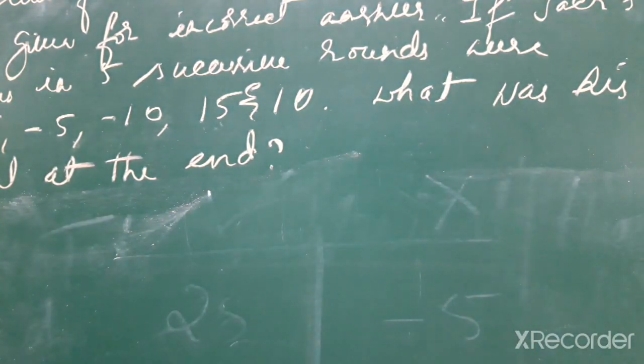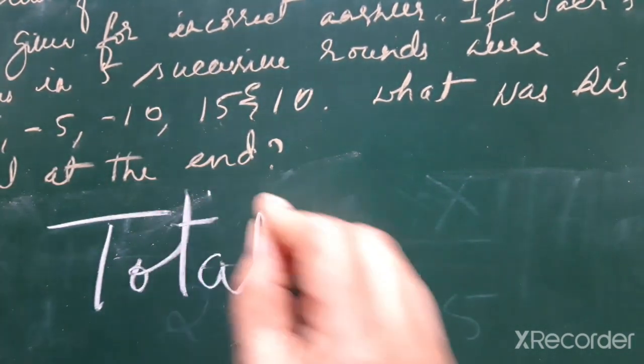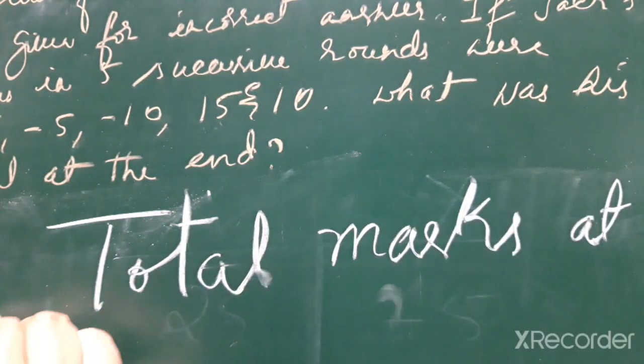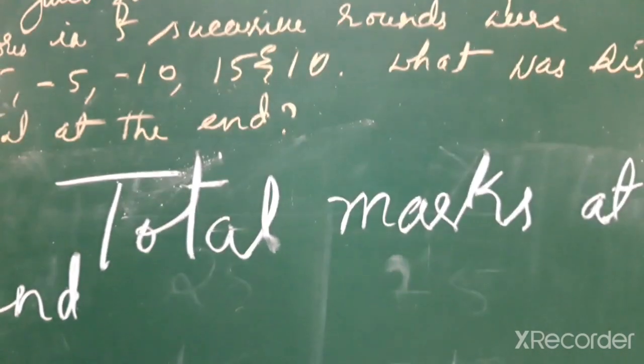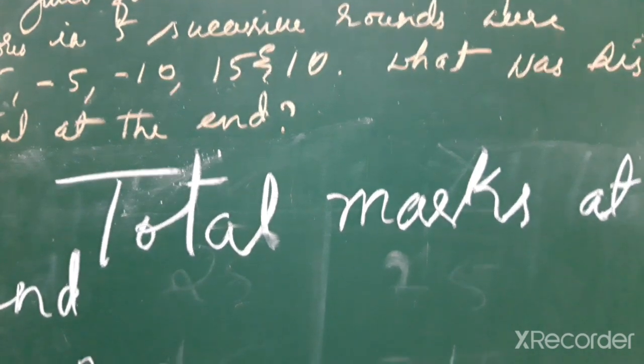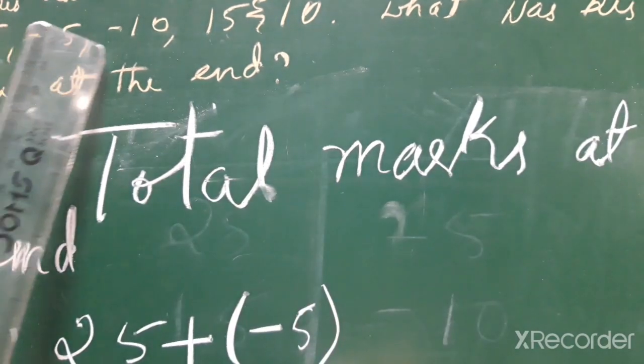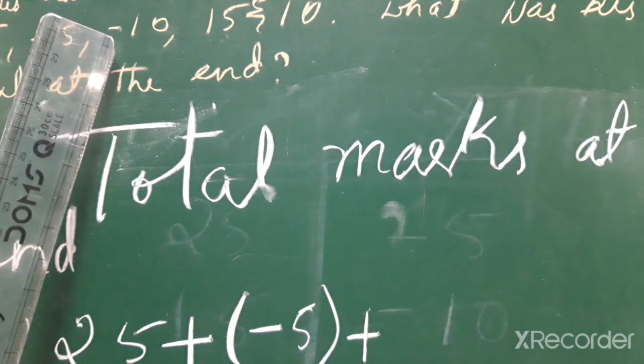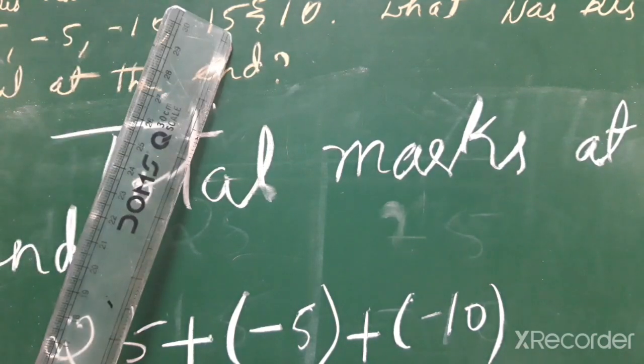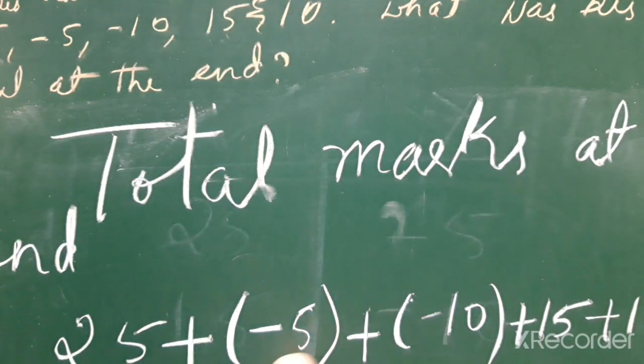With integers, we find what are the total marks. Total marks at the end. So here, 25 in the first round is positive marks, 25, plus then again negative marks -5, plus -5, plus because we are adding the total. Again -10, negative number, so we are putting in brackets, plus 15, plus 15, and 10 means plus 10. Five rounds of marks.